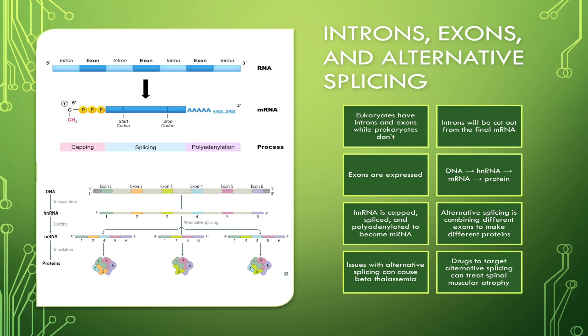The cool thing about having exons is that you can combine different exons by alternative splicing to produce a different number of proteins, and you see this in the dopamine receptors in our brain.